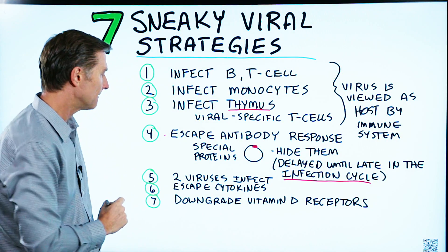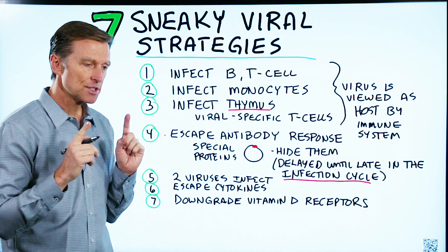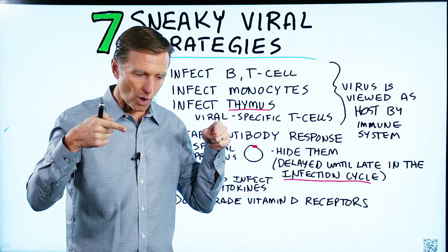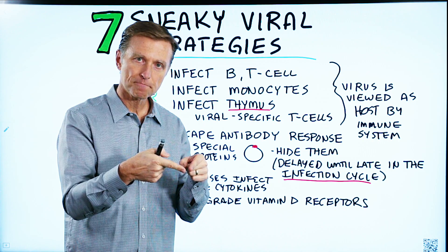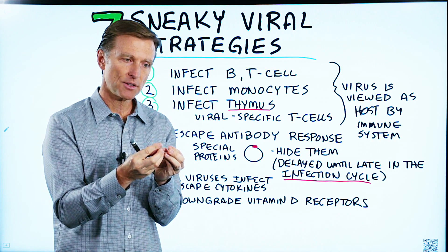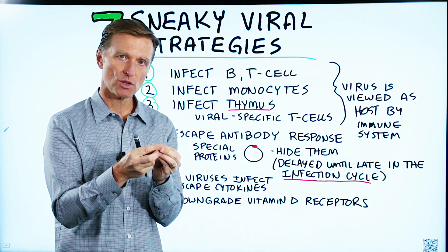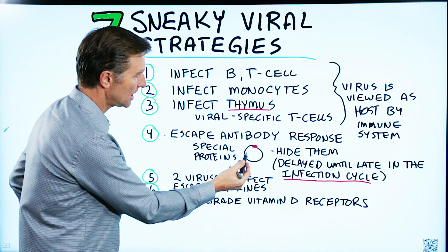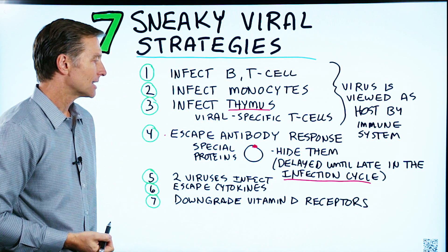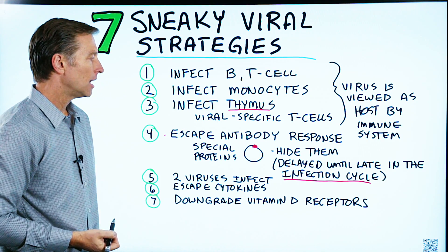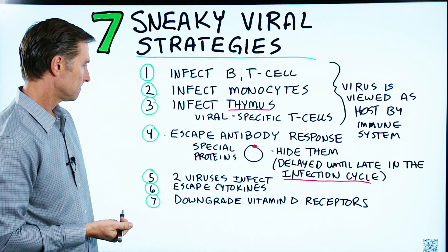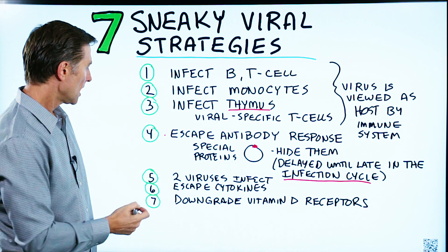Number five: you can have two viruses invade one cell, and what they do is work together to rearrange those proteins on the outside of the cell so they can escape attack from our own immune system.